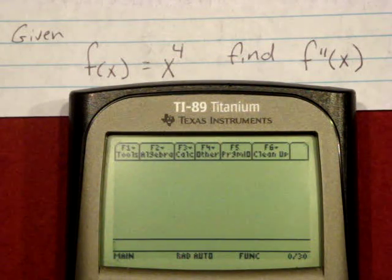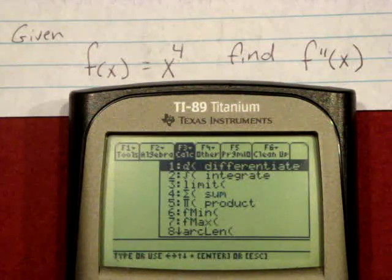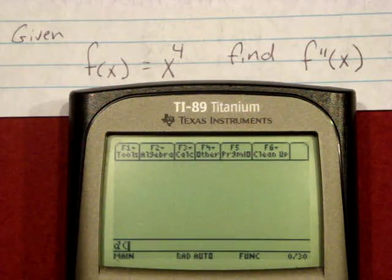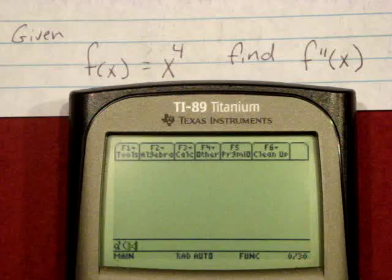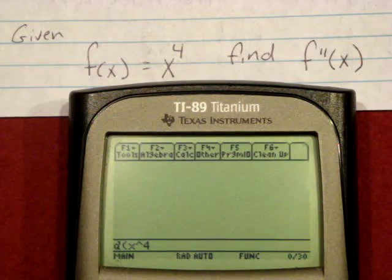Simply go to the calculus menu on the home screen, select differentiate, enter in your function, tell the calculator which variable to use, delineated with comma x.